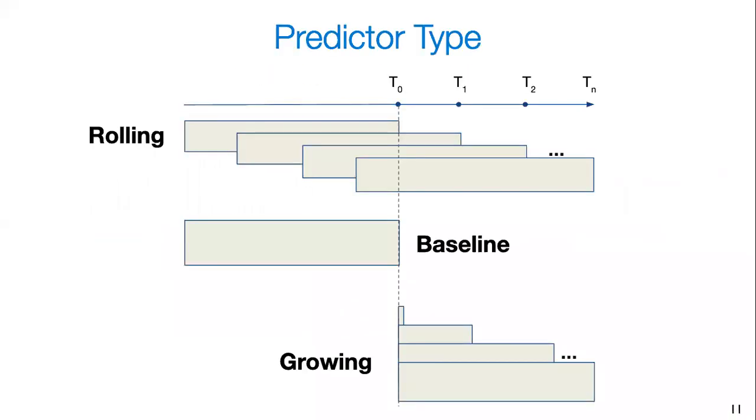Just to recap and to show these side by side, we have T0 as the start of the first prediction, and then we have rolling predictors, we have baseline predictors which start before then, and then we have growing predictors which start after that to contrast that.